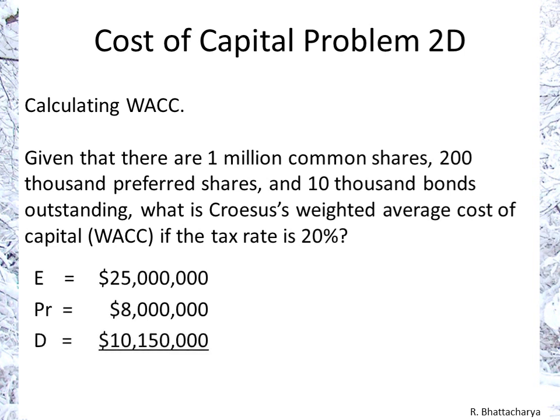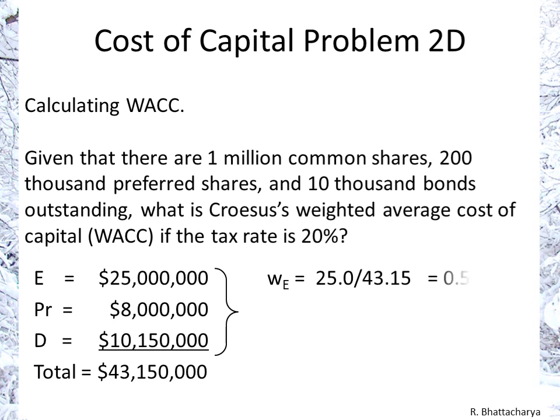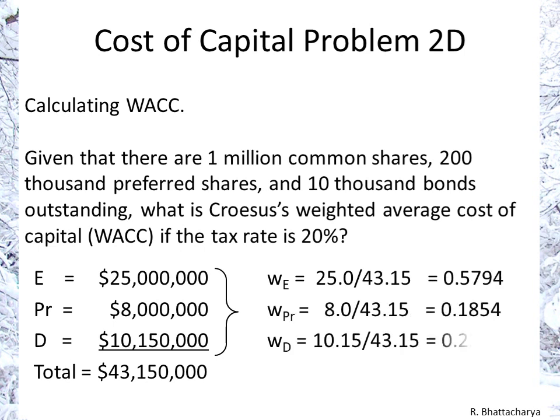Totaling those together, we get $43,150,000. This allows us to calculate the proportions or weights by looking at the ratios of each component to the total: the value of the shares to the total, the value of the preferred shares to the total, and the value of the debt to the total. That gives us the weight of equity, weight of preferred, and weight of debt.